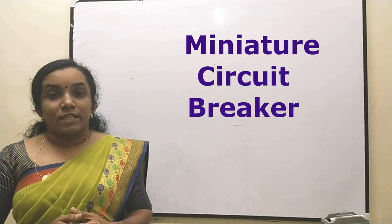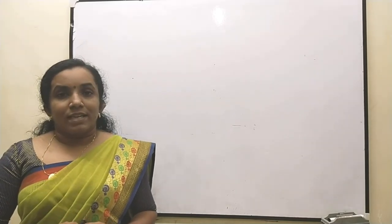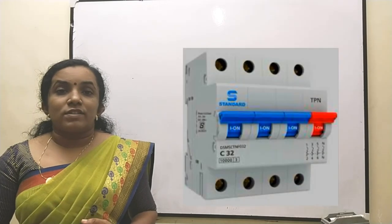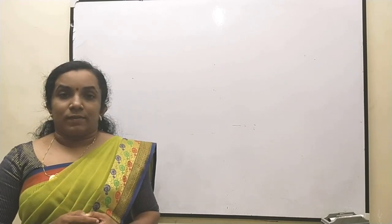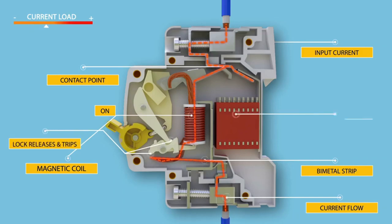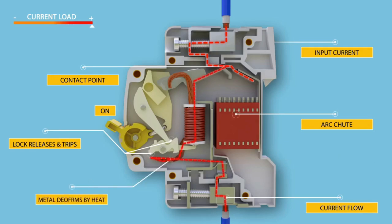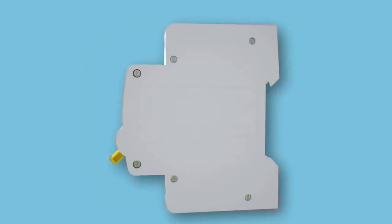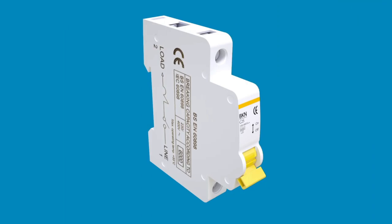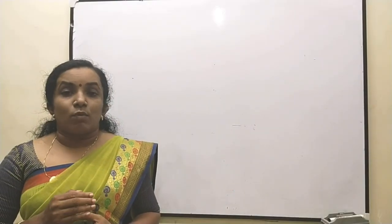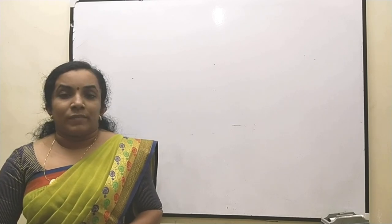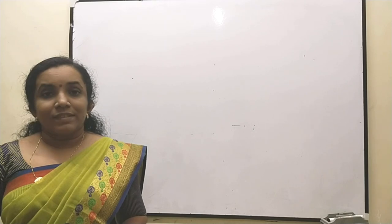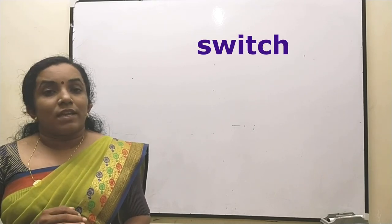MCB stands for miniature circuit breaker. Nowadays, instead of fuses, MCBs are used in individual circuits. They work on the principle of the magnetic effect of current — if heavy current flows due to a short circuit, the MCB trips and switches off the circuit. After repairing the fault, the MCB can be reset. This is more convenient than a fuse because it avoids replacing fuse wire and has a quicker response.